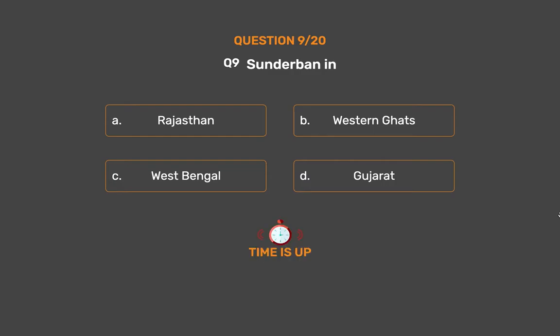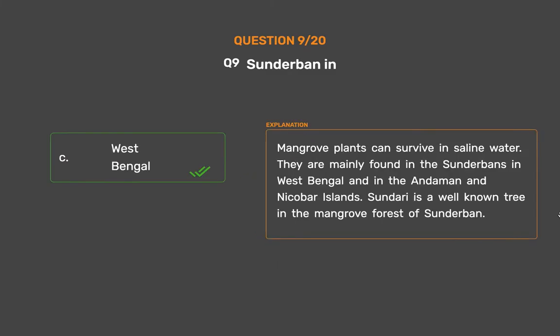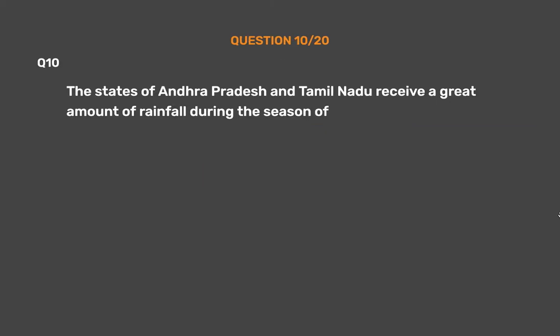The correct answer is Option C: West Bengal. Mangrove plants can survive in saline water. They are mainly found in the Sundarbans in West Bengal and in the Andaman and Nicobar Islands. Sundari is a well-known tree in the mangrove forest of Sundarbans.